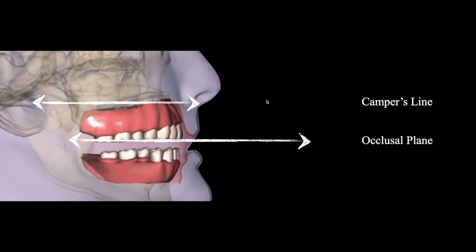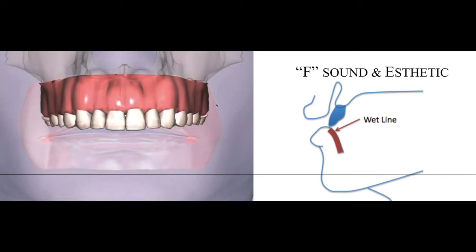The third and last reference finalizes the Z-axis — the height of the occlusal plane — which is strictly determined by functionality and aesthetic considerations. So we finalize the X, Y, and Z axes to determine the correct occlusal plane.